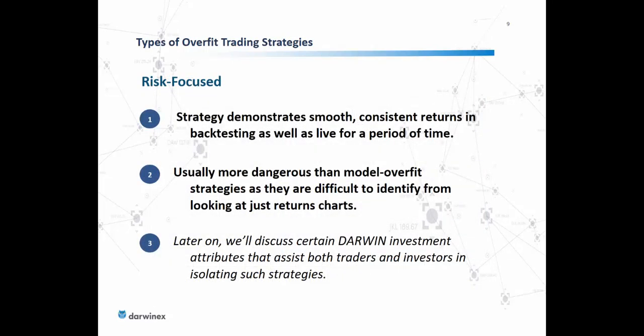In the case of risk-focused overfit strategies, we're looking at a different scenario altogether. These strategies demonstrate smooth, consistent returns in backtesting as well as in live trading for a period of time, and they're usually more dangerous than model overfit strategies as they're difficult to identify from looking at just returns charts. We'll discuss how Darwin investment attributes can assist both traders and investors in isolating such strategies before they eventually collapse.